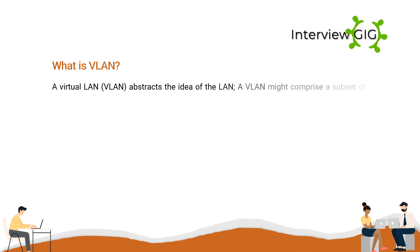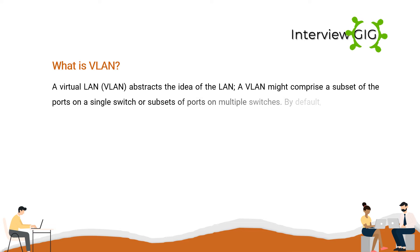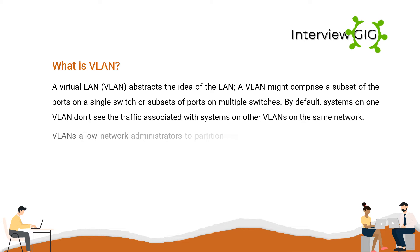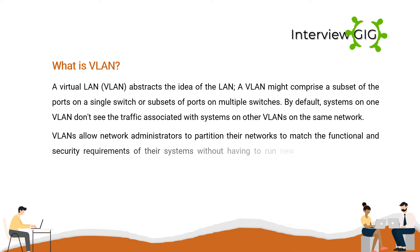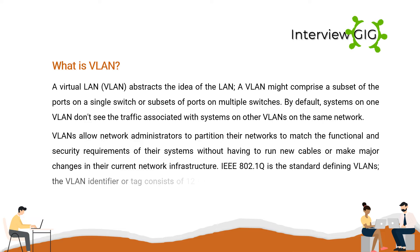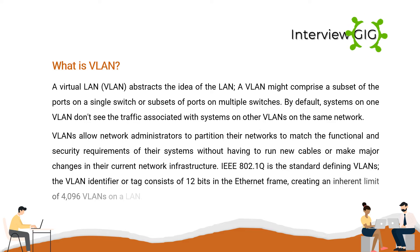What is a VLAN? A virtual LAN (VLAN) abstracts the idea of the LAN. A VLAN might comprise a subset of the ports on a single switch or subsets of ports on multiple switches. By default, systems on one VLAN don't see the traffic associated with systems on other VLANs on the same network. VLANs allow network administrators to partition their networks to match functional and security requirements without having to run new cables or make major changes to current network infrastructure.